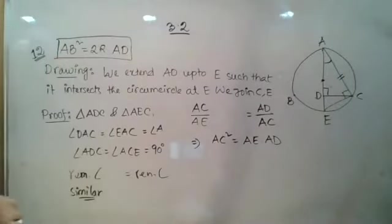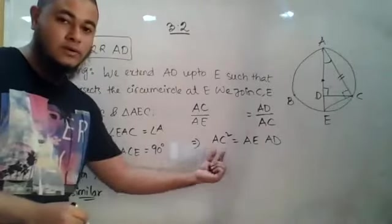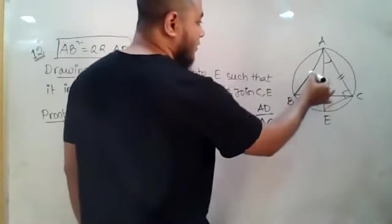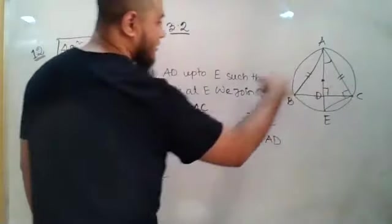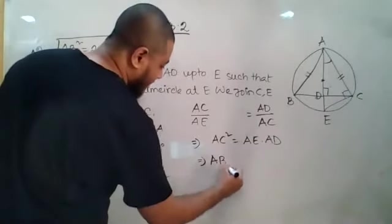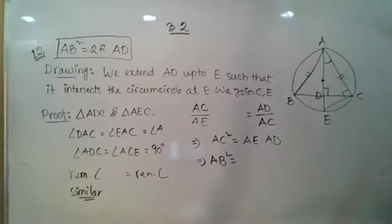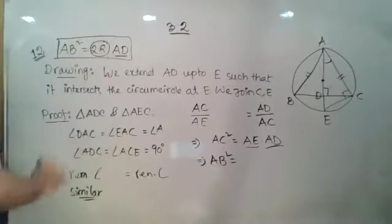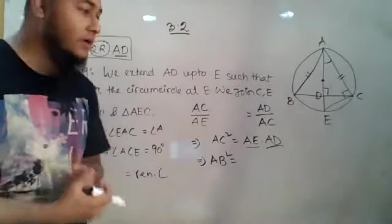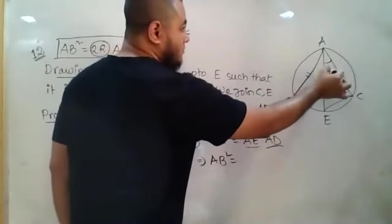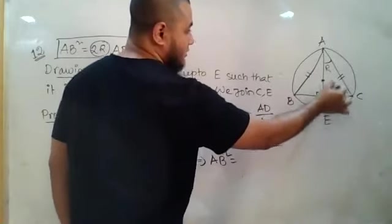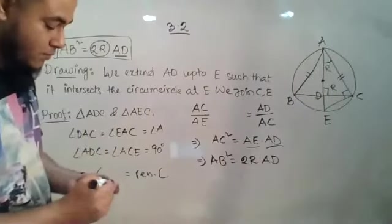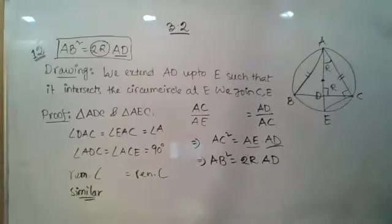We have AC² but we need AB². Since this is an isosceles triangle with AB = AC, we replace AC² with AB², giving AB² = AE × AD. Now, AE is a diameter of the circumcircle, so AE = 2R. Therefore AB² = 2R × AD, which is what we needed to prove.